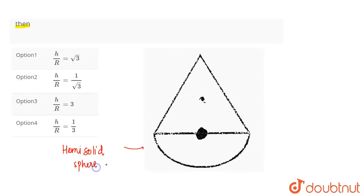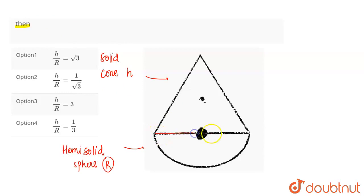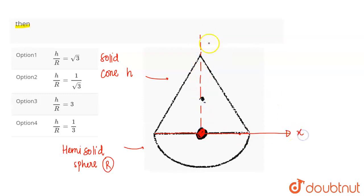Here we have a solid hemisphere and a solid cone sharing a common base. This is the radius of the common base, and this is the solid cone with its total height. The condition given is that the center of mass of the whole system lies at the common base.